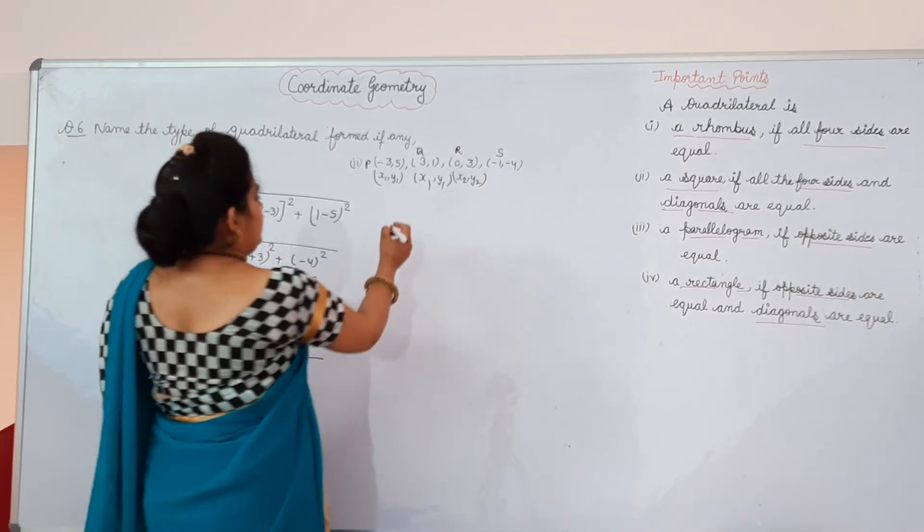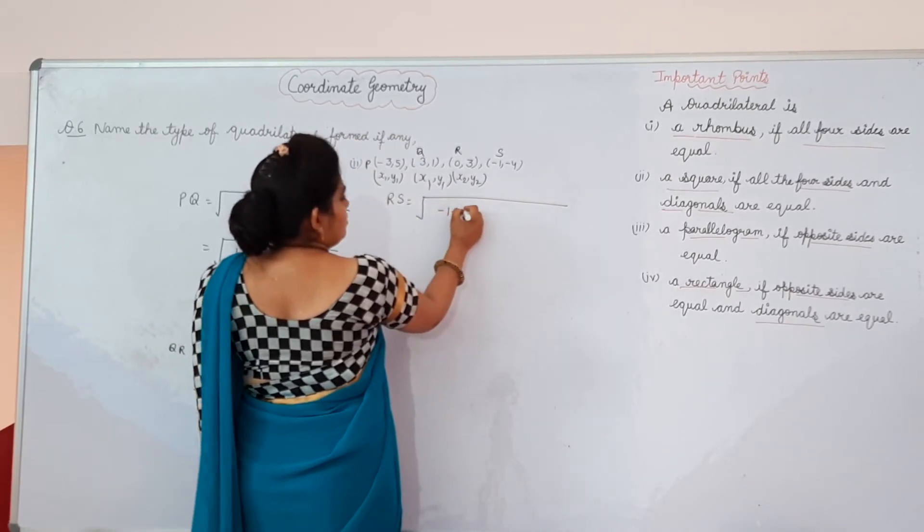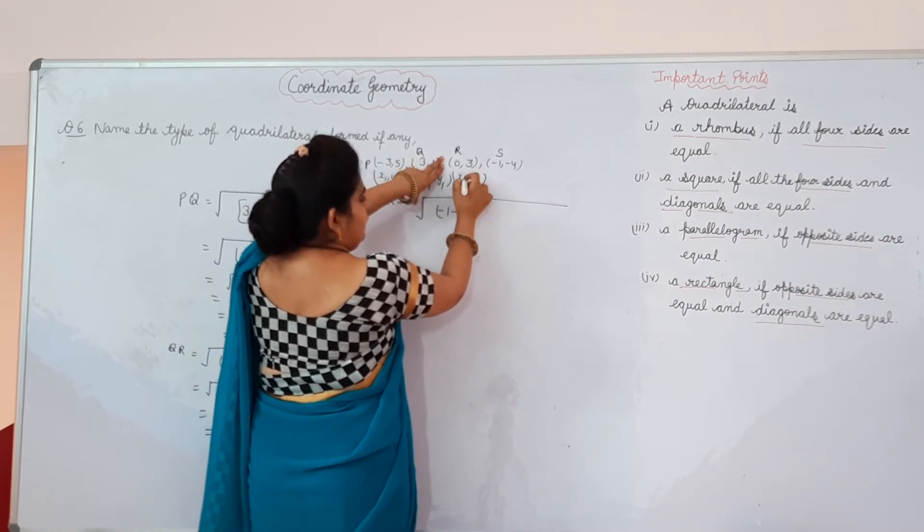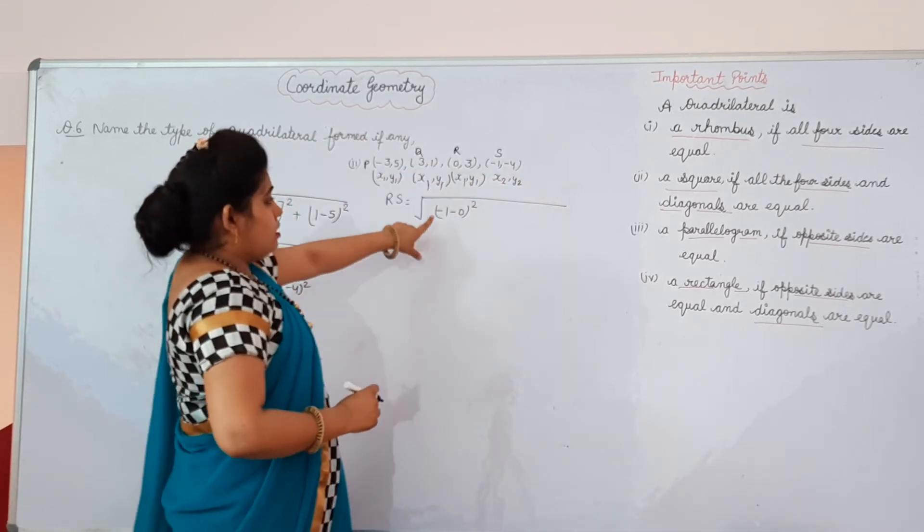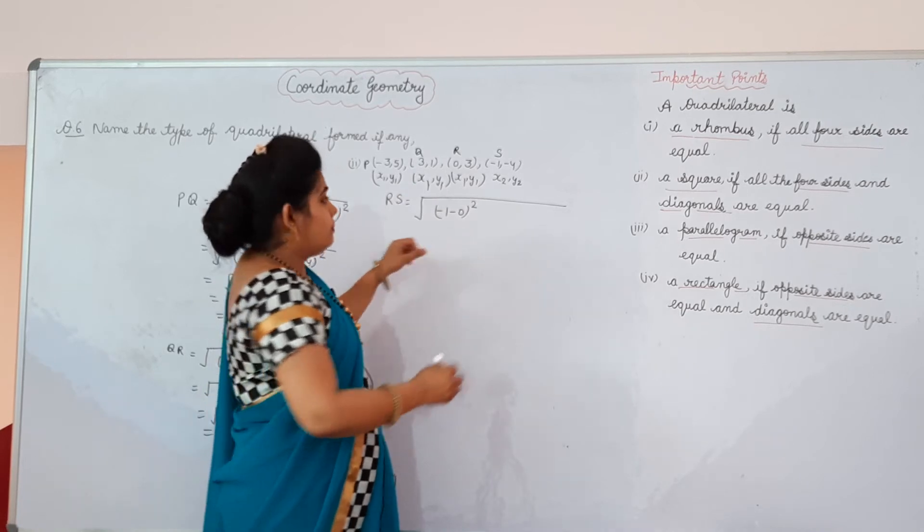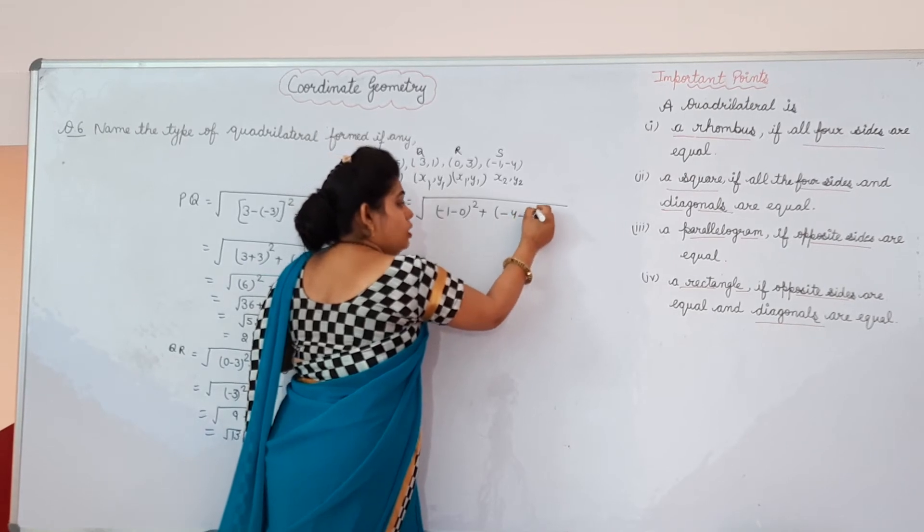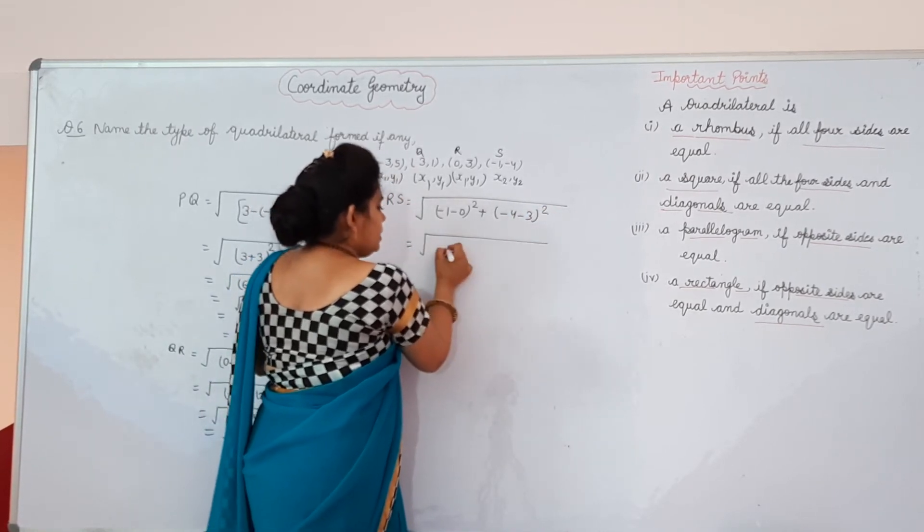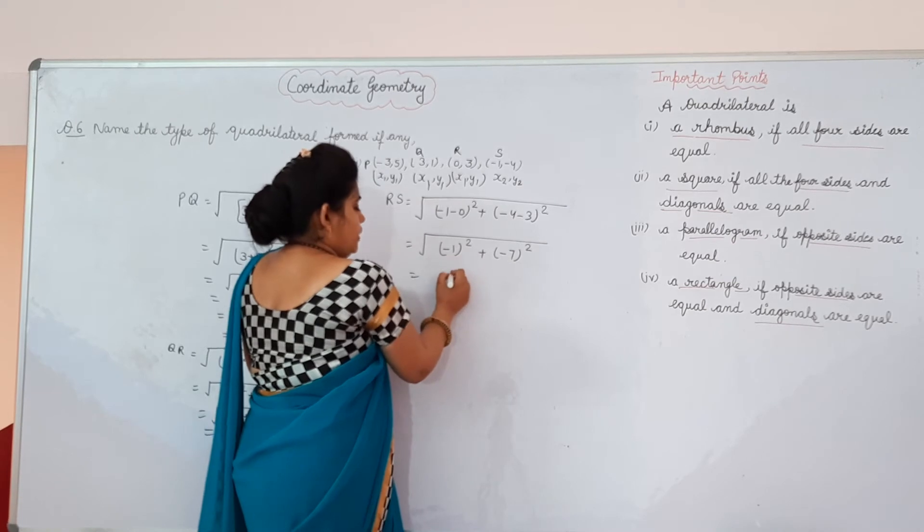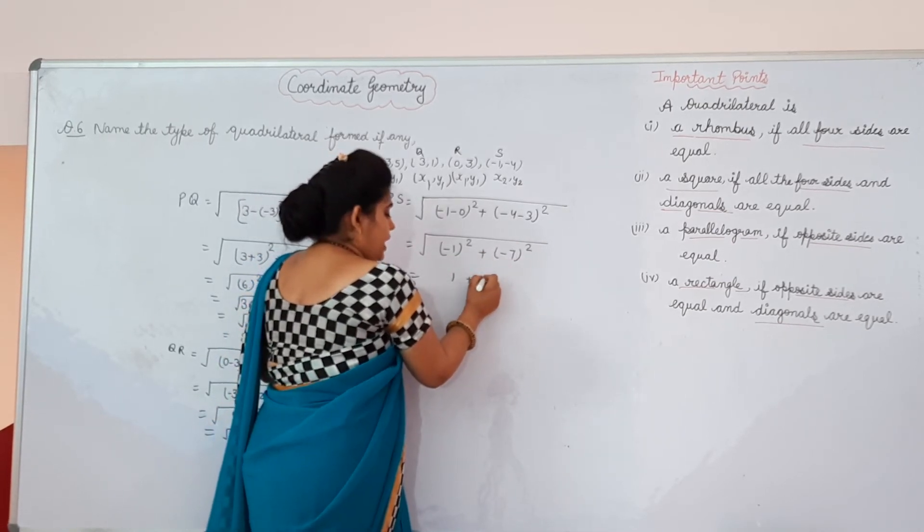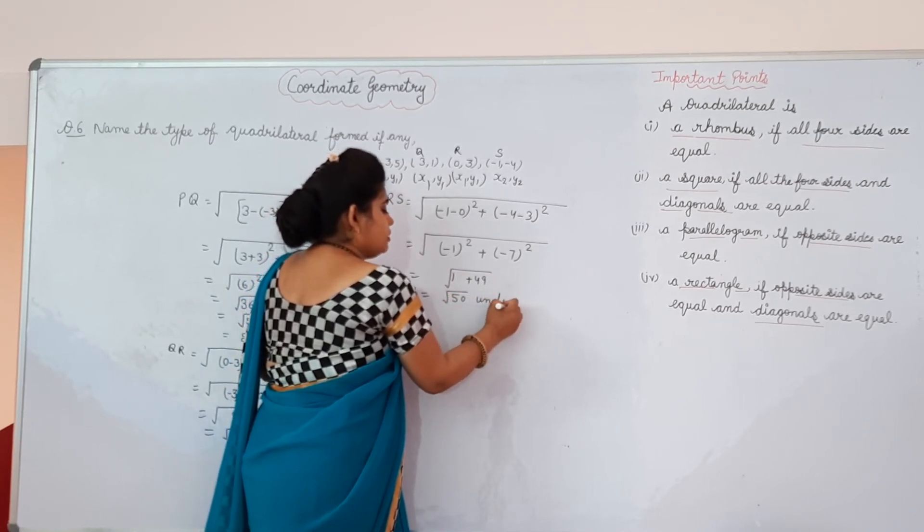Now we will calculate RS. RS is equal to square root of minus 1 minus 0 whole square. If I am taking it as X1, Y1, X2, Y2, then minus 1 minus 0 whole square plus minus 4, it is 3, then it will become minus 3 whole square. From here, minus 1 square plus minus 7 whole square. 1 square is 1, 7 square is 49, and it is square root and it will equal to square root of 50 units.